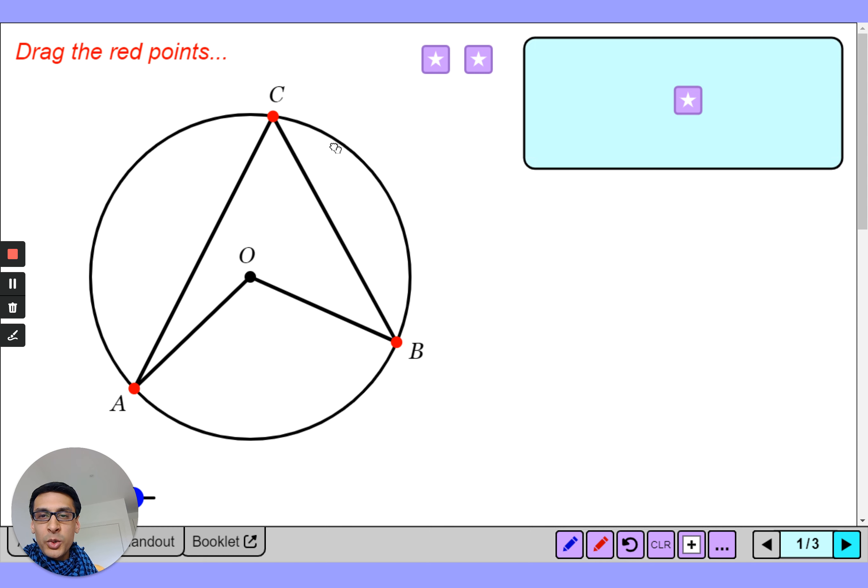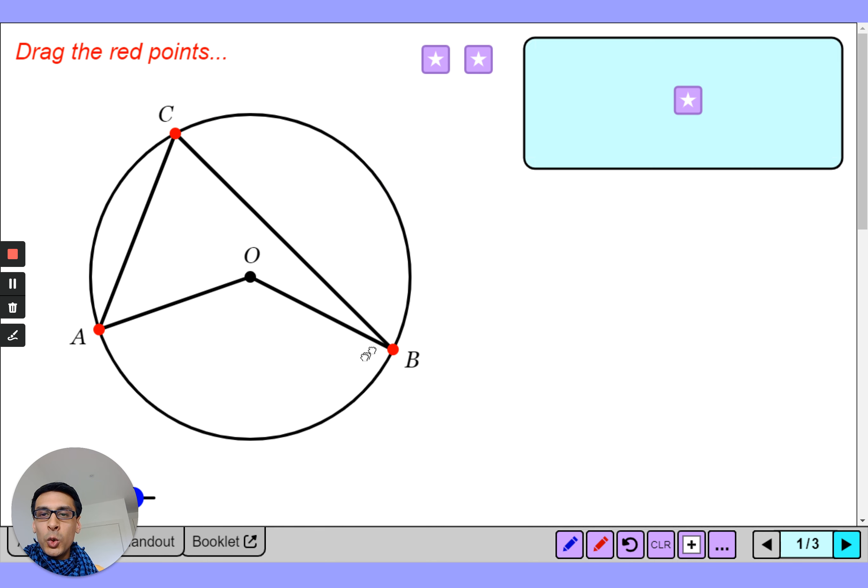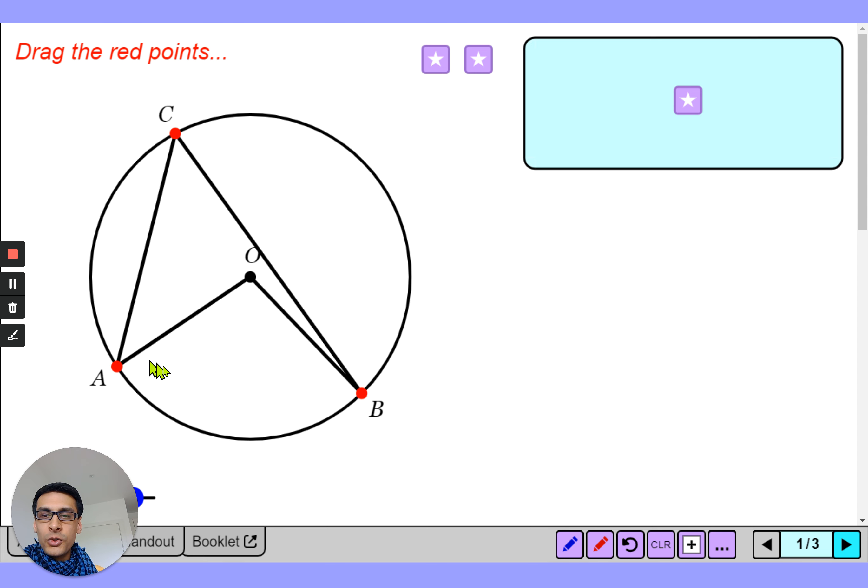I'm going to drag the points around so you can see there's point C moving around the top, and we can also move these points around here. So all of the points of this quadrilateral except for that one are on the circumference.